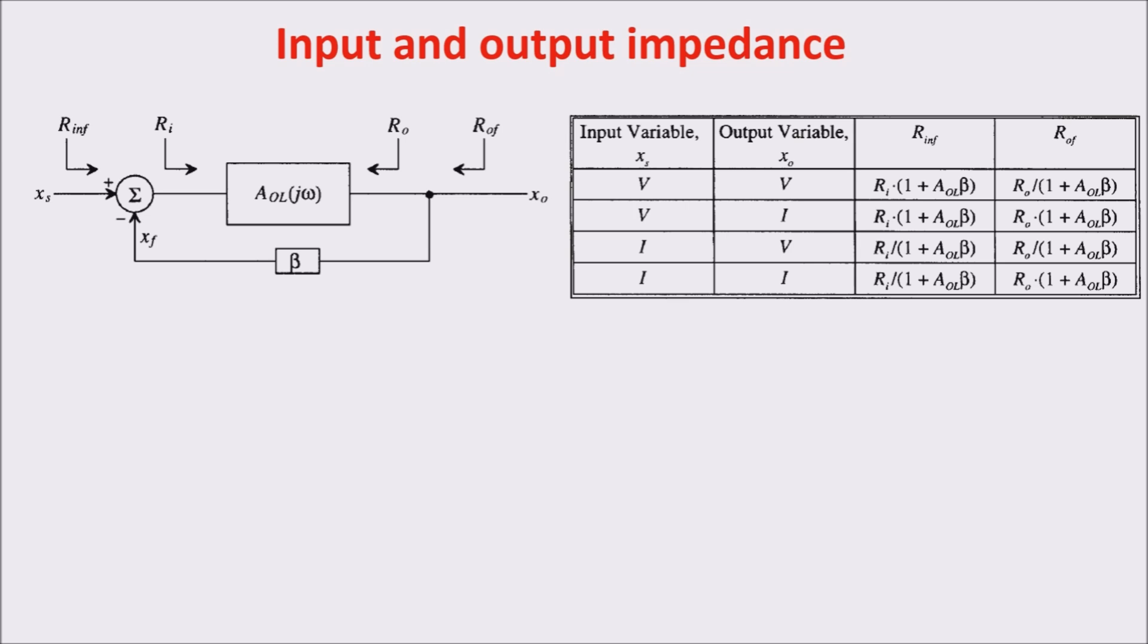If the input variable Xs is a voltage the closed loop input resistance Rinf is equal to the open loop value of the input resistance Rin multiplied by the value of 1 plus AOL beta and if the output variable is a current the open loop output impedance is multiplied by the same factor.